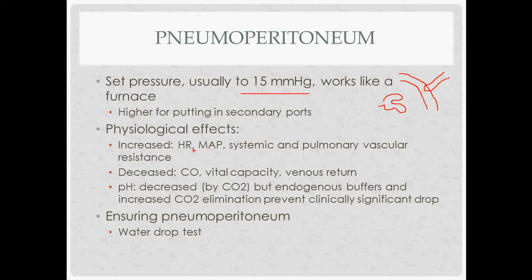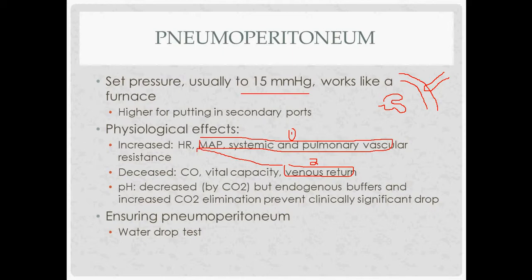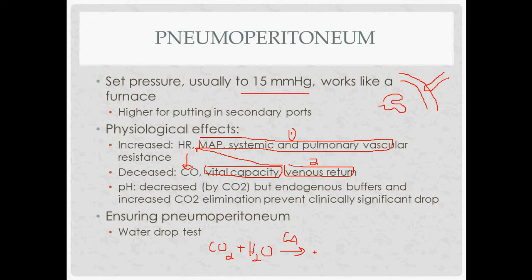The physiologic effects of pneumoperitoneum — think of it two ways. First, it's stressful: you get increased MAP, systemic and pulmonary vascular resistance. Second, it's mechanical — increasing abdominal pressure is like putting a big mass in the abdomen, which decreases venous return. The heart rate tries to compensate but can't fully, so cardiac output decreases, and vital capacity also decreases. As for pH: CO2 combines with water via carbonic anhydrase to make bicarbonate and hydrogen ions, which would lower pH — but it doesn't drop in a clinically significant way because of endogenous buffers and increased CO2 blow-off.